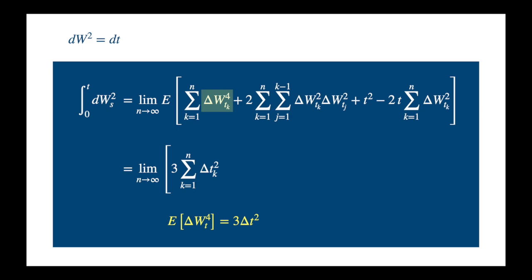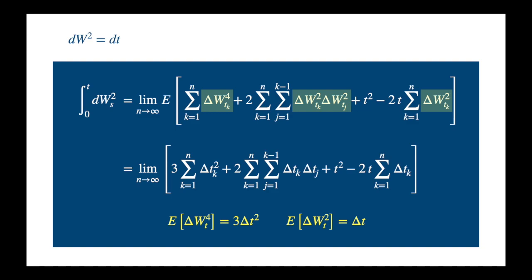And from the same video, we also know that the expected value of W squared is equal to the length of the interval, and because the Brownian increments in disjoint intervals are independent, we replace the expected value of delta W squared by delta t.